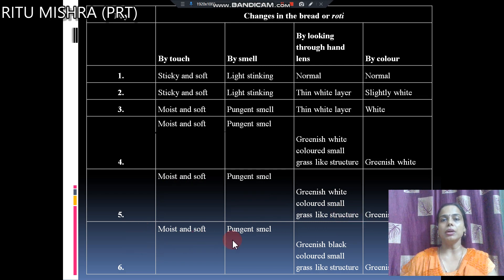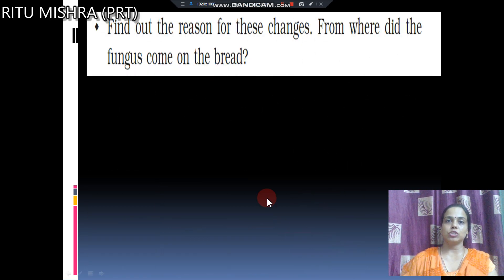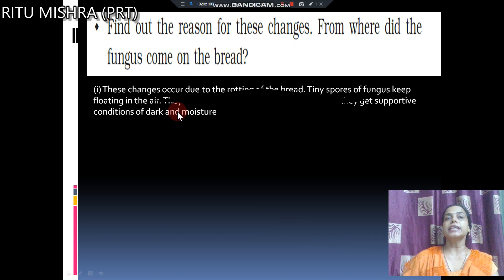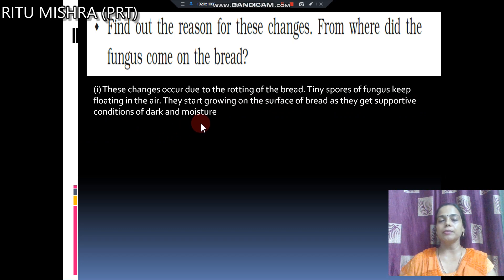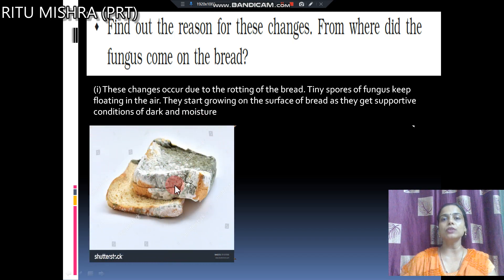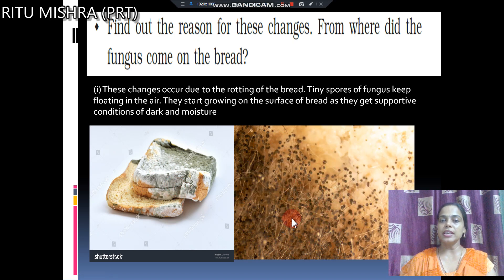On day six, it was moist and soft, the smell was pungent, and the color had turned greenish-black. When we look at it through a lens, we can see grass-like structures and round ball-like structures — these are spores. Tiny spores of fungus keep floating in the air. They start growing on the surface of bread when they get supportive conditions of dark and moisture. Find out the reasons for these changes — from where did the fungus come on the bread? These changes occur due to the rotting of bread caused by fungus spores in the air.